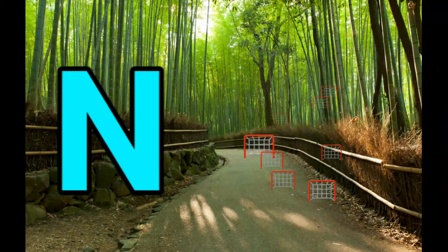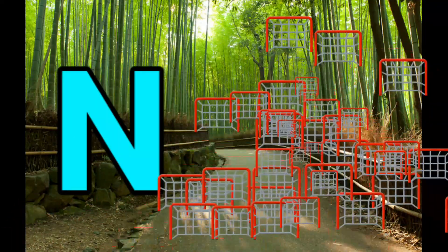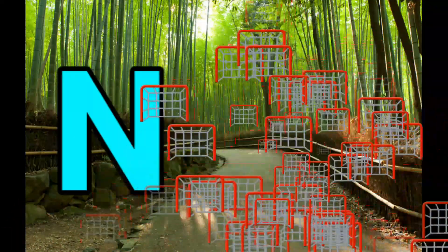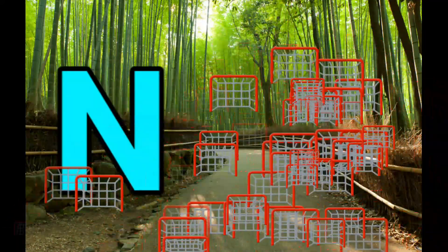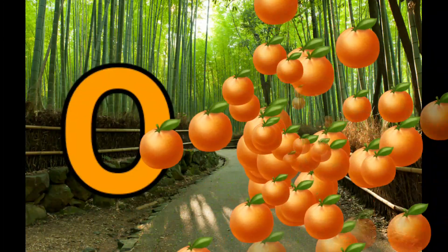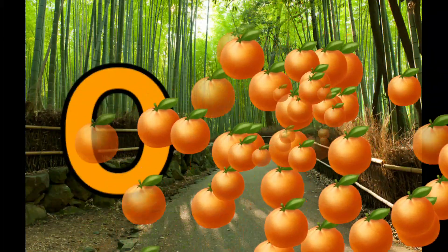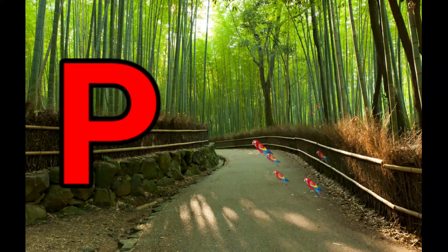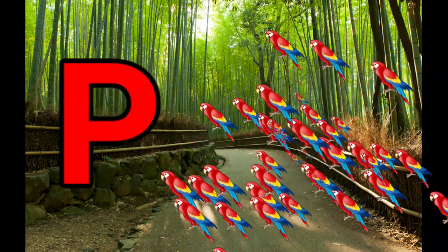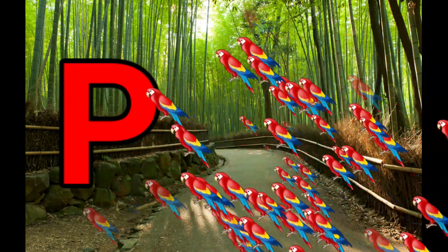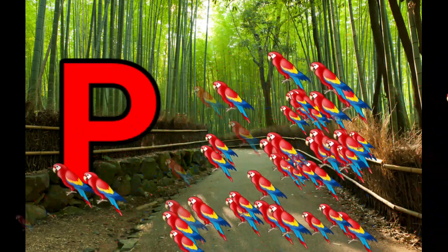N is for Net, N-N-Net. O is for Orange, O-O-Orange. P is for Pet, P-P-Pet.